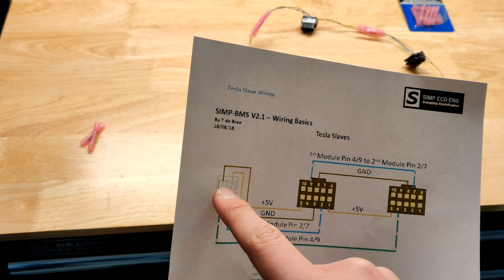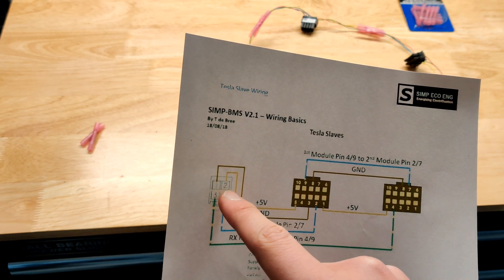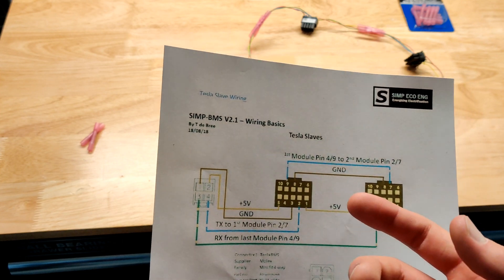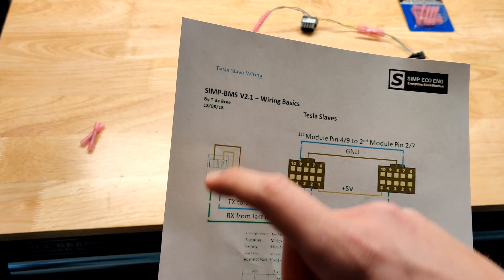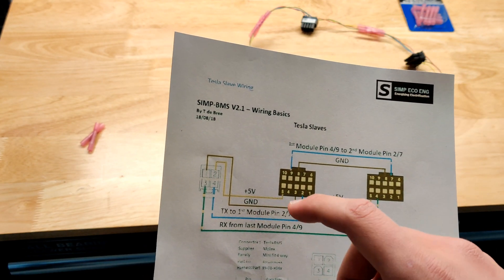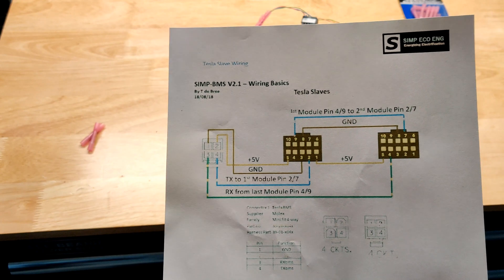So you need the 5 volt power out and then the ground, both of those are power wires. And then the TX and RX which are signal wires to create a complete loop for communications with the modules.